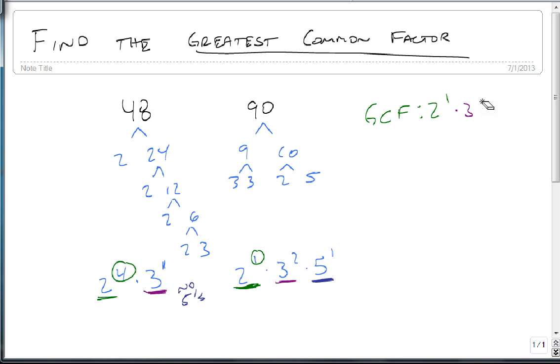So my final answer, other than the fact that I'm goofed up, is 2 to the 1st times 3 to the 1st, which is 2 times 3, or 6. So 6 is the largest number that divides evenly into 48 and into 90.